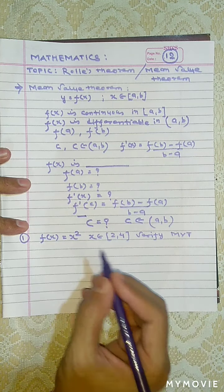To summarize: f(x) was given, x belonged to closed interval [2, 4]. The given function is polynomial, so it is continuous in [2, 4] and differentiable in (2, 4). We found f(2) = 4 and f(4) = 16, then f'(x) = 2x. Applied the formula f'(c) = [f(b) - f(a)] / (b - a), found c = 3 which belongs to open interval (2, 4). This is the verification of Mean Value Theorem.